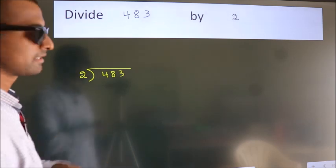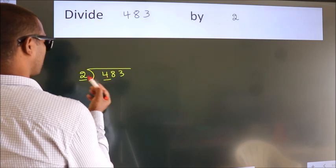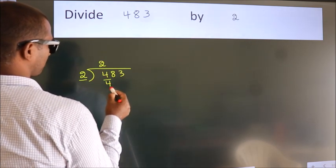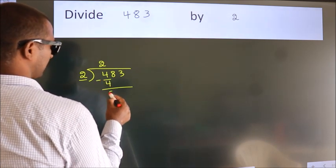Next, here we have 4, here 2. When do we get 4? In 2 table, 2 2s, 4. Now, we should subtract, we get 0.